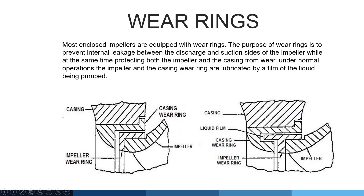Wear rings. Most enclosed impellers are equipped with wear rings. The purpose of the wear rings is to prevent internal leakage between the discharge and suction sides of the impeller while at the same time protecting both the impeller and the casing from wear. Under normal operation, the impeller and casing wear rings are lubricated by a film of the liquid being pumped.